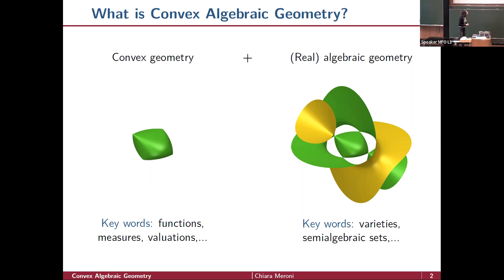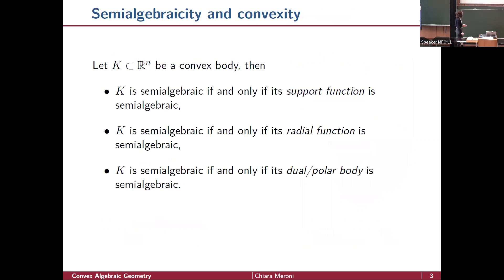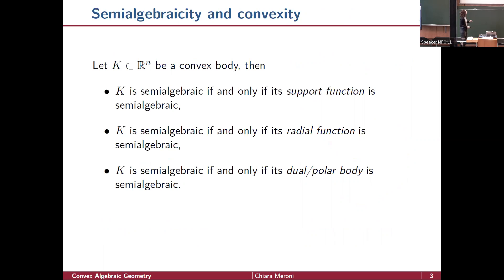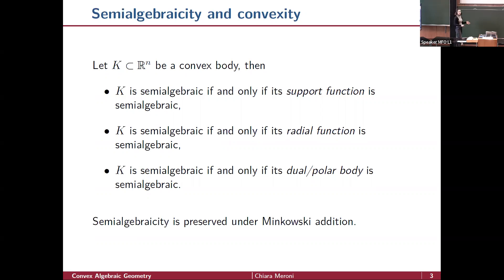This notion of semi-algebraicity behaves well with respect to convexity in the following sense. Let K in R^n be a convex body. Then K is semi-algebraic if and only if its support function is a semi-algebraic function, if and only if its radial function is a semi-algebraic function, and if and only if its dual or polar body is semi-algebraic.